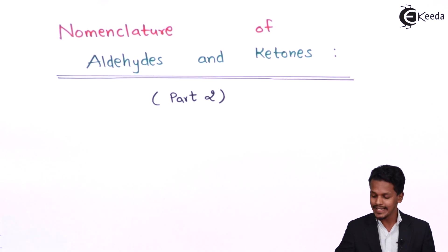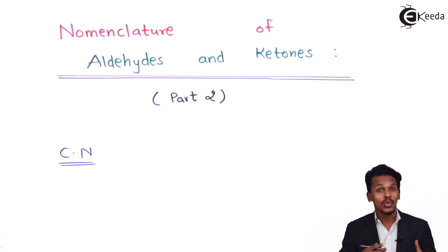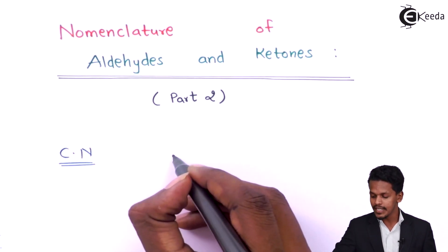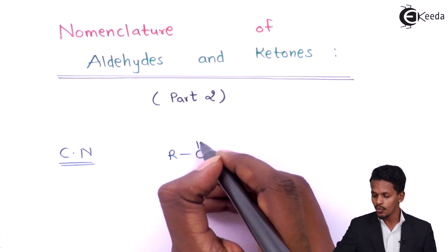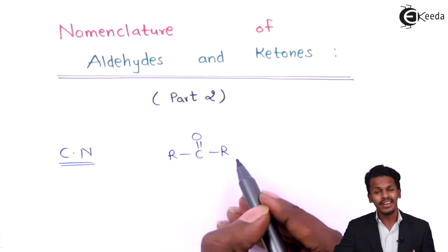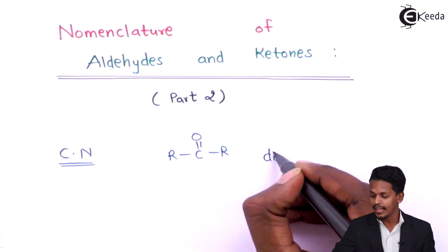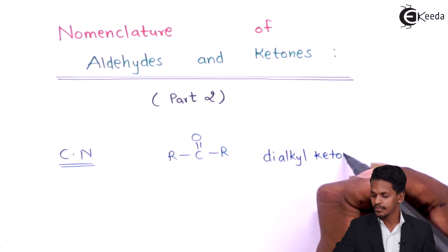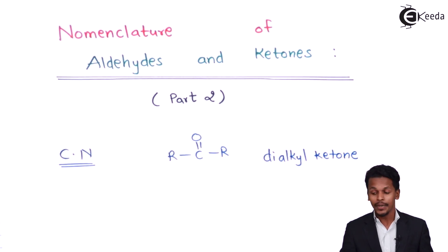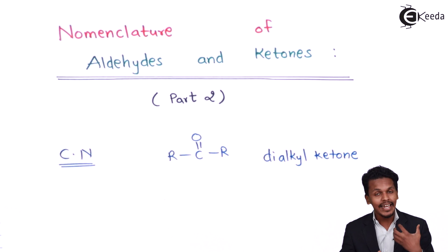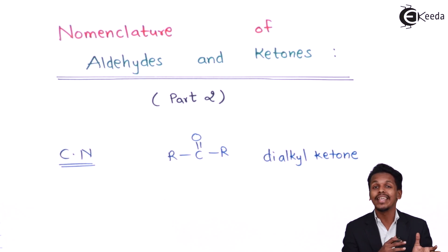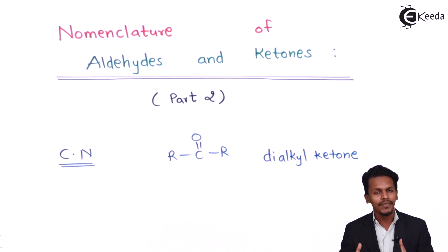First, let us understand how we give the common name to ketones. For example, RC double bond O is a ketone. If both alkyl groups attached are the same, the ketone is given the common name as dialkyl ketone. But if both alkyl groups are different, we assign the name in alphabetical order. Let us discuss the common name first and then move on to IUPAC nomenclature.